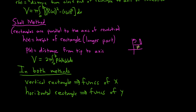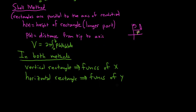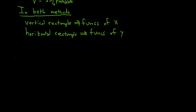Let's do a few examples using the disk and shell method. I'm going to pick something that's very easy to graph, and we're not going to evaluate — we're just going to set it up. Let's say we have y = √x, with x = 4 and y = 0 as our region.